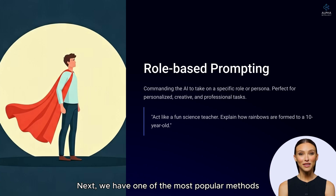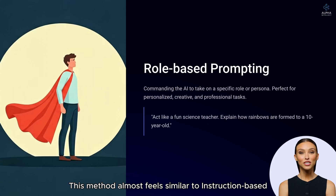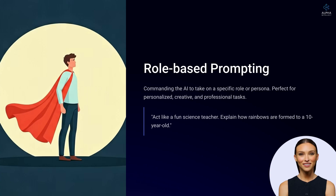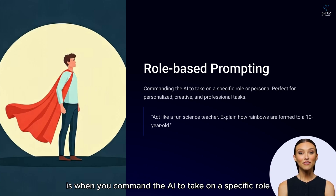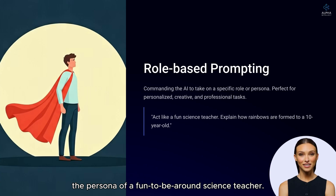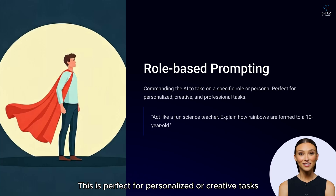Next, we have one of the most popular methods: role-based prompting. This method can feel similar to instruction-based prompting, as both are sometimes integrated with each other. Role-based prompting is when you command the AI to take on a specific role or persona — such as 'Act like a fun science teacher, explain how rainbows are formed to a 10-year-old.' Here you are assigning the model the persona of a fun science teacher, which is perfect for personalized, creative, and professional tasks.